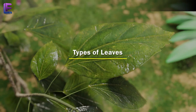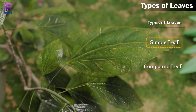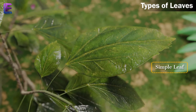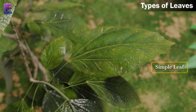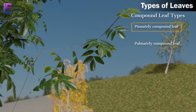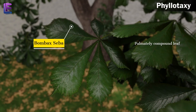Types of leaves: Leaves are of two types. 1. A simple leaf, and 2. Compound leaf. A leaf is said to be simple when its lamina is entire, or when incised, the incisions do not touch the midrib. When the incisions of the lamina reach up to the midrib, breaking it into a number of leaflets, the leaf is called compound. Compound leaves are of two types: A. Pinnately compound leaf, for example neem. B. Palmately compound leaf, for example Bombax.